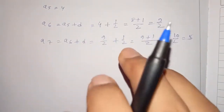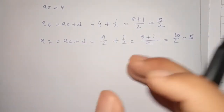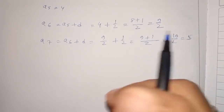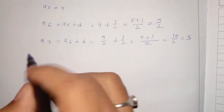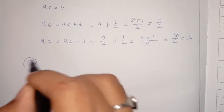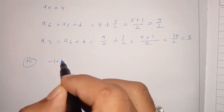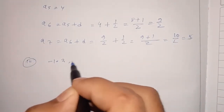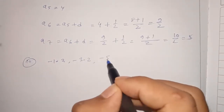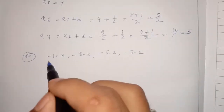The calculation is done. Now for the next example, the sequence is minus 1.2, minus 3.2, minus 5.2, minus 7.2.